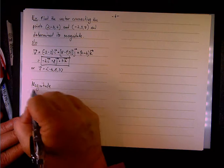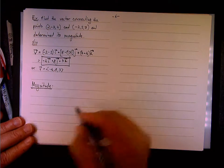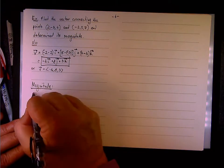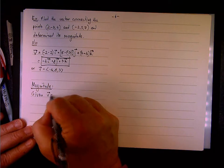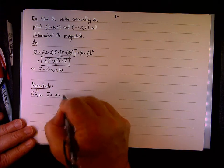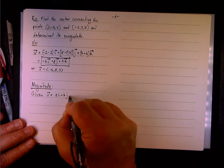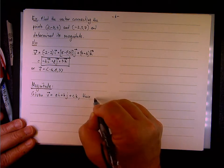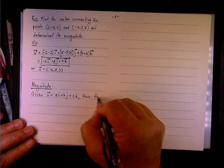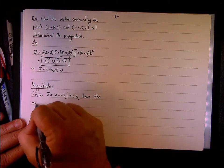What is the magnitude? The magnitude of vector, the general magnitude given a vector v equals, let's say, ai + bj + ck.